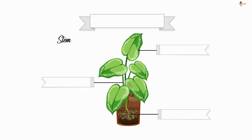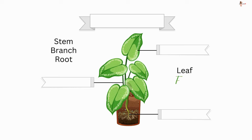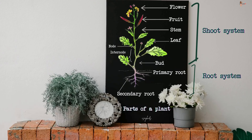Can you label the stem here? How about the branch, root, leaf, flower, and fruit of the plant? You can pause and take a screenshot of the complete labeled diagram of the parts of a plant.